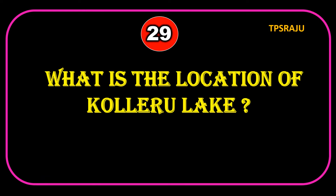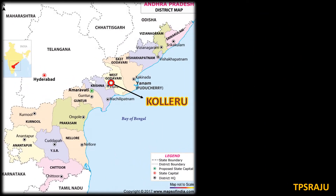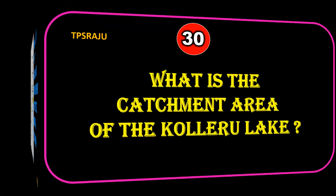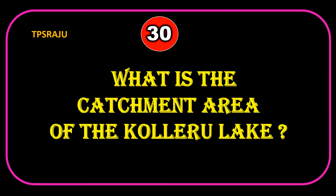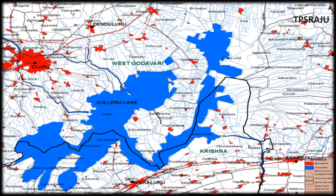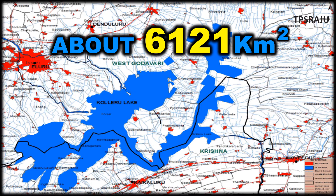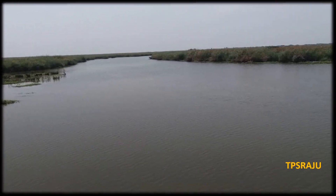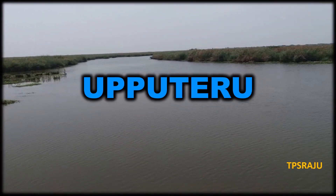What is the location of Kolleru Lake? Between West Godavari and Krishna Districts in Andhra Pradesh. What is the catchment area of Kolleru Lake? About 6,121 km². The lake Kolleru discharges its excess water into the Bay of Bengal through the twisty channel called Puppu Teru.